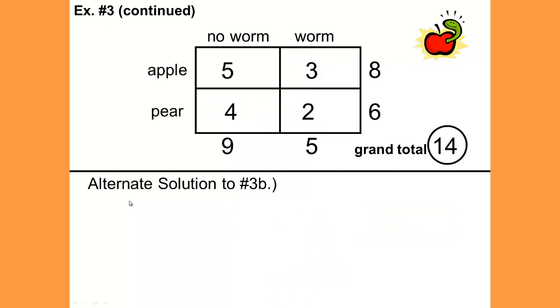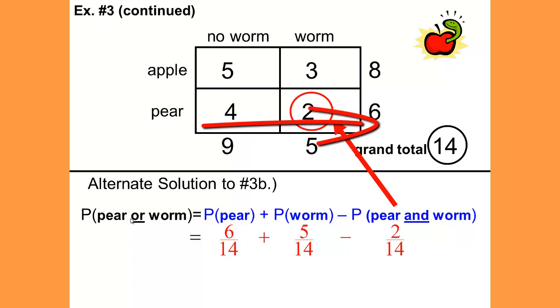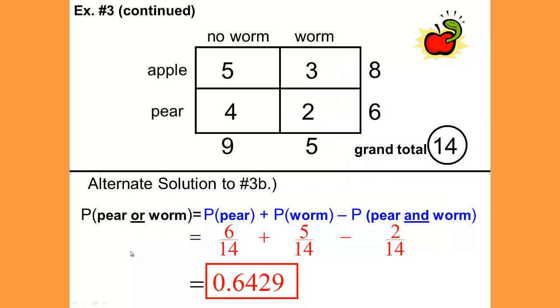We have an alternate solution to 3B where we could use the formula. Pear or worm would be the probability of pear plus the probability of worm minus the probability of pear and worm. The probability of pear would be 6 out of 14. That's all of the pears together. The probability of worm would be 5 out of 14, all of the worms. But remember that by doing that, we have added the 2 twice. 4 plus 2 equals 6. 3 plus 2 equals 5. So we need to subtract the 2 from where we added it twice. And we still get the same answer of .6429.